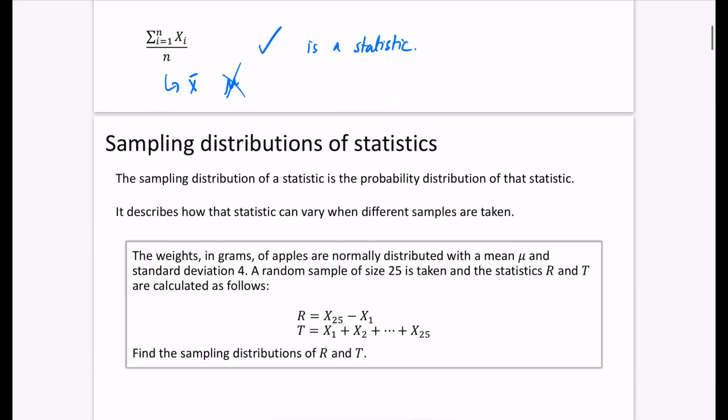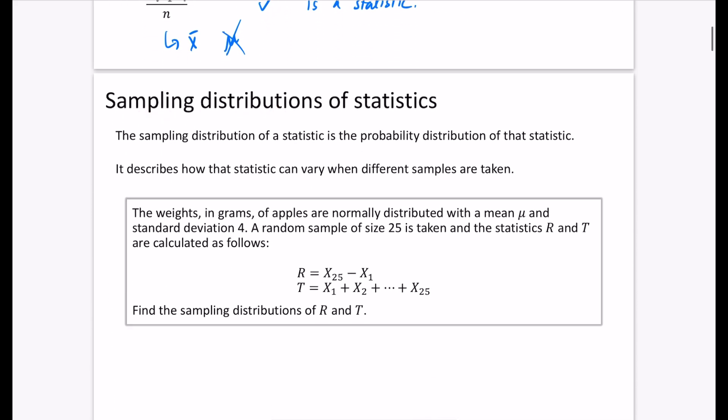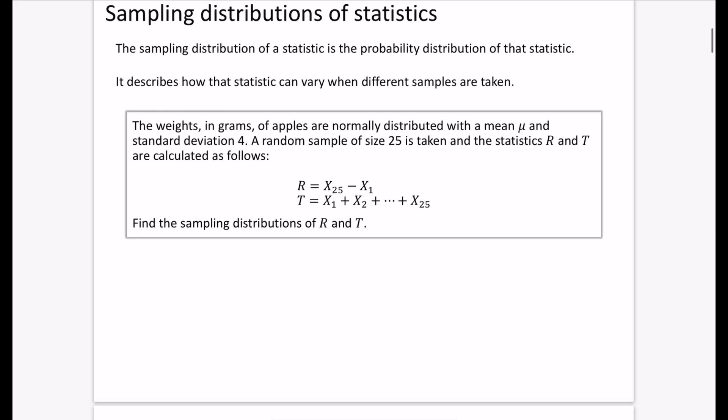We're going to look at sampling distributions of statistics. The sampling distribution of a statistic is the probability distribution of that statistic. It describes how that statistic can vary when different samples are taken. I'll explain this with an example to give you an idea of what we're talking about.